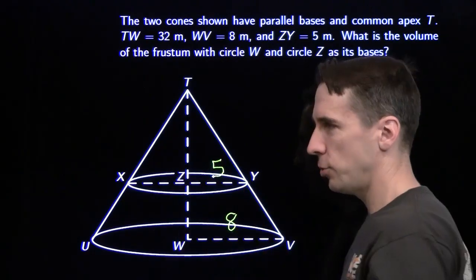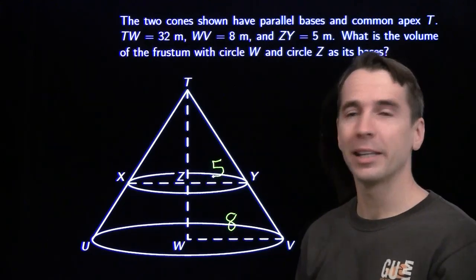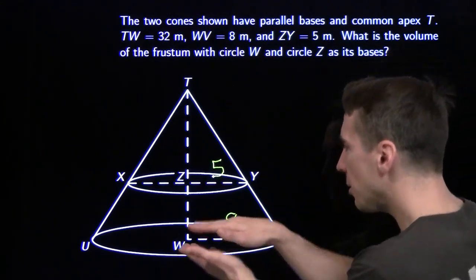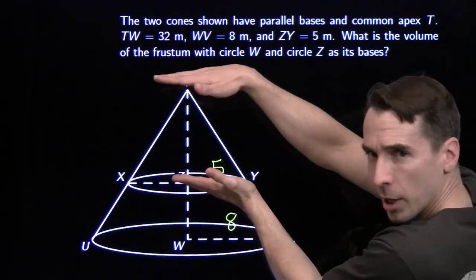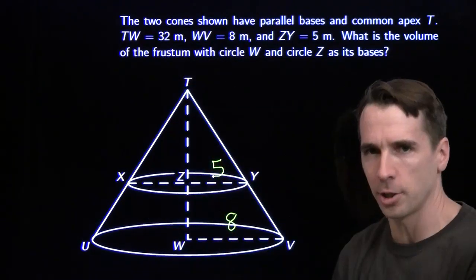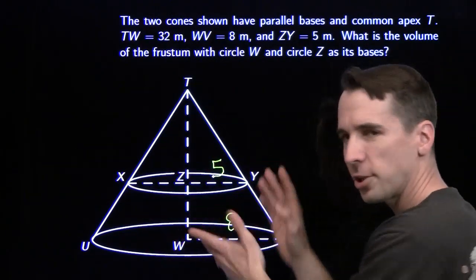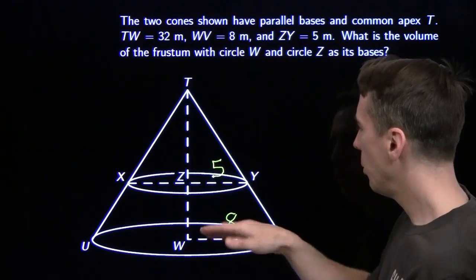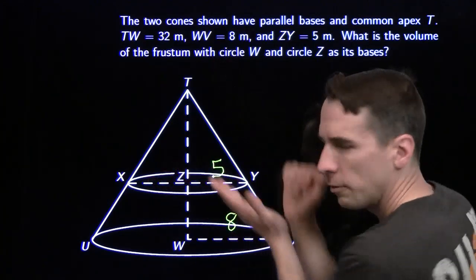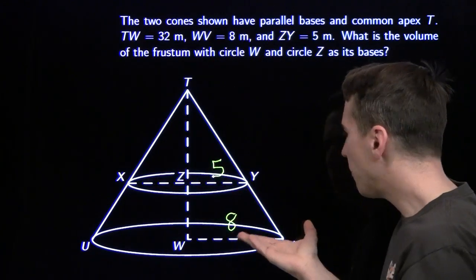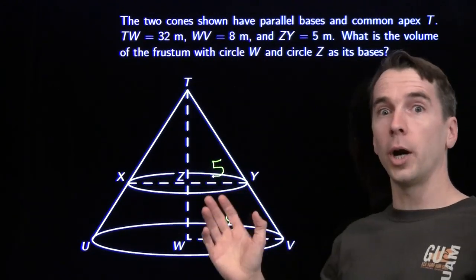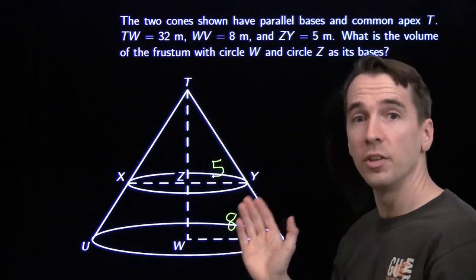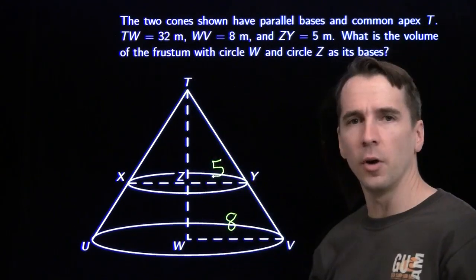Well, Harvey, this time they've drawn the small cone for us. Thank you, Math Counts. So we can go straight in with our frustum strategy: think of the frustum as what's left when you chop a small cone off of a large cone. These bases are parallel. These cones are similar, so we can work with this. We find the volume of the large cone, subtract the volume of the small cone. We can find the volume of the large cone right away because they already gave us the height. So now all we have to do is find the height of the small cone, then we can get its volume as well.